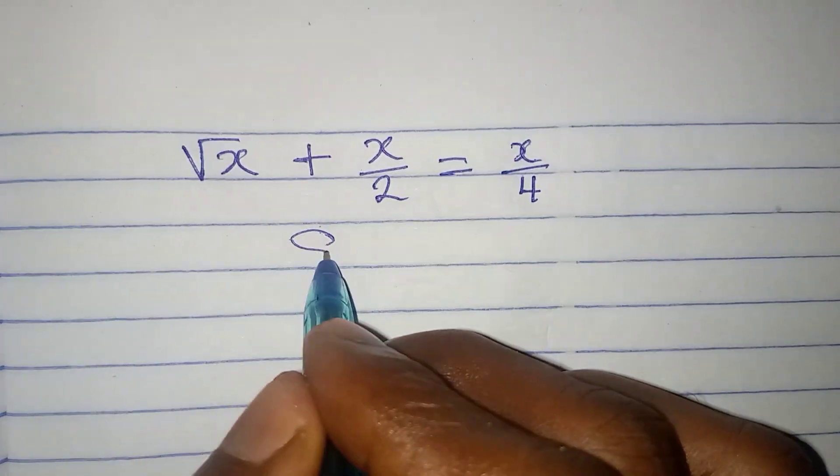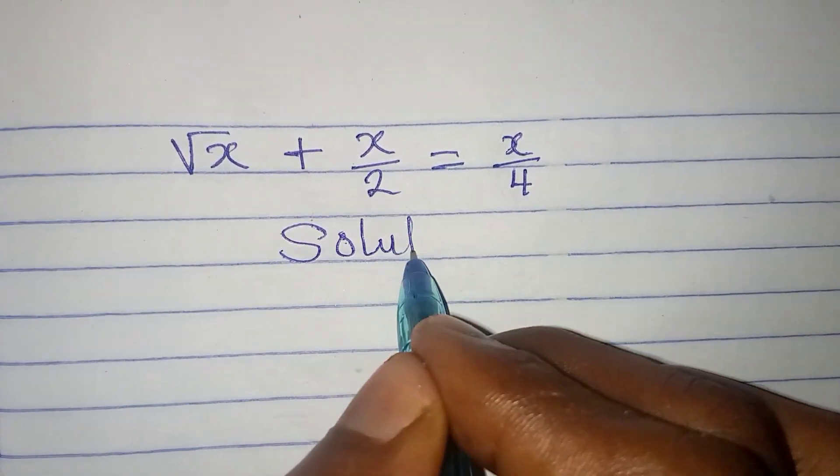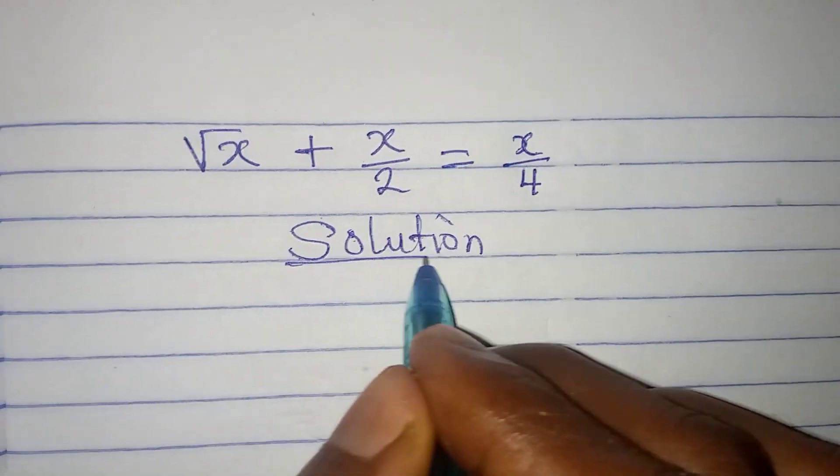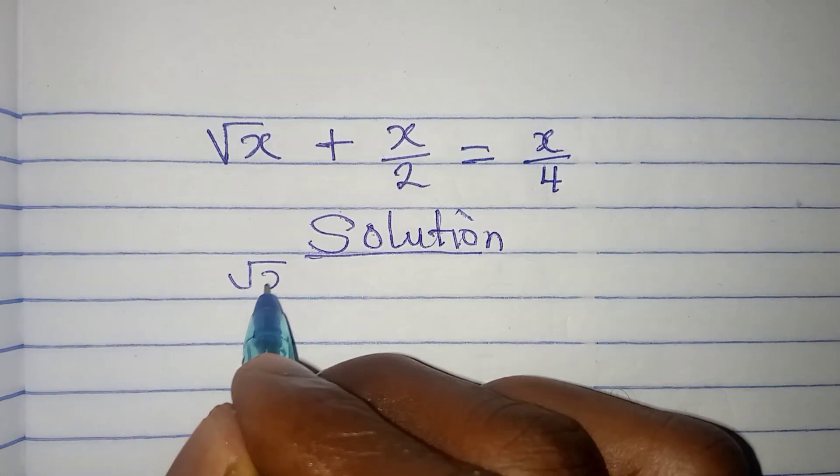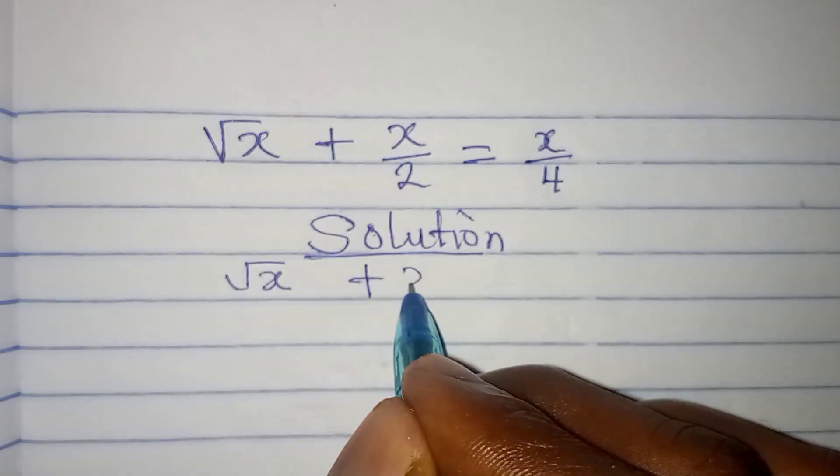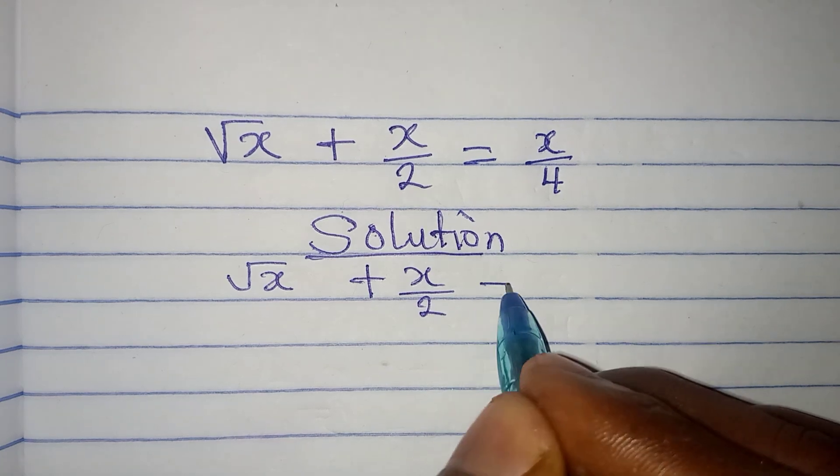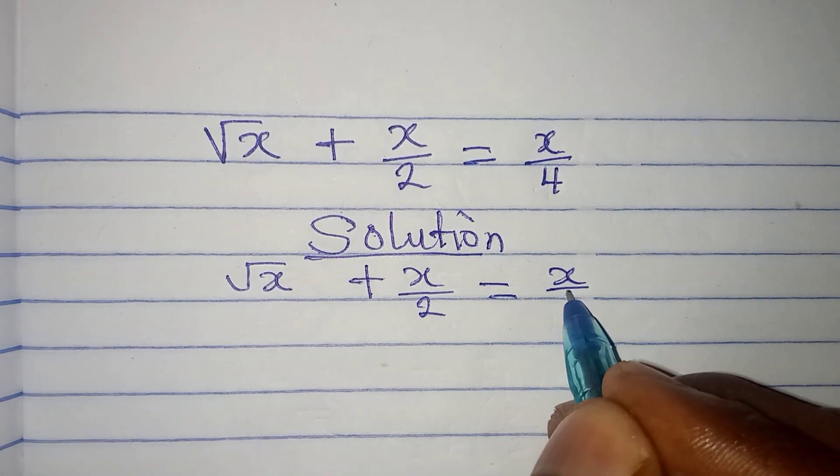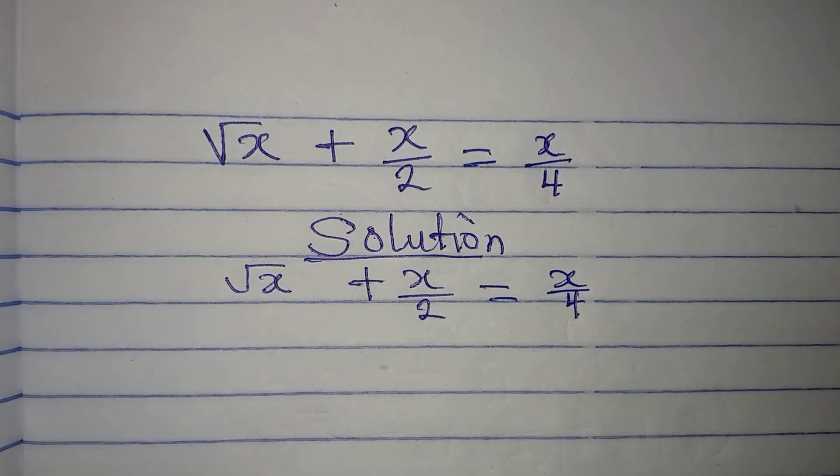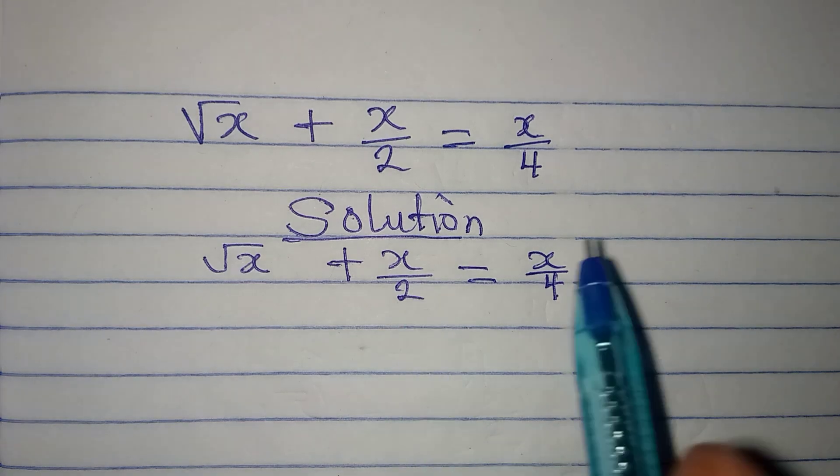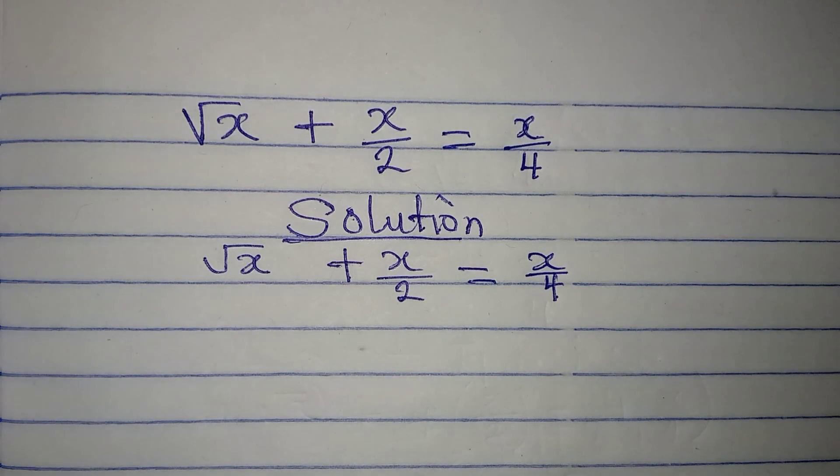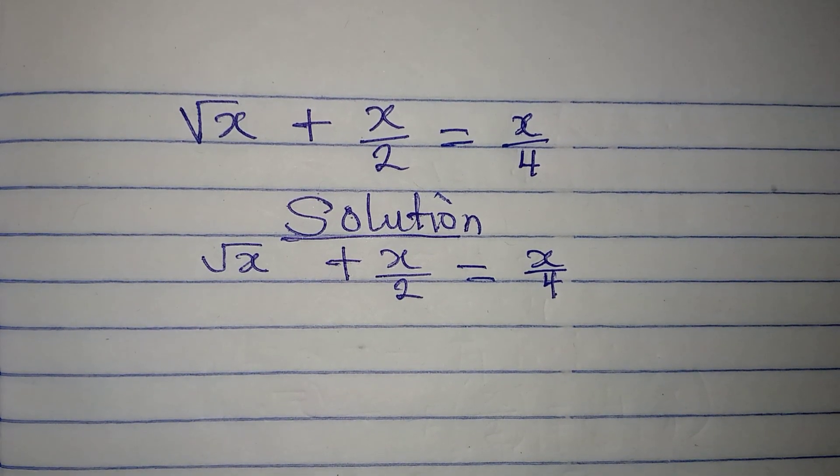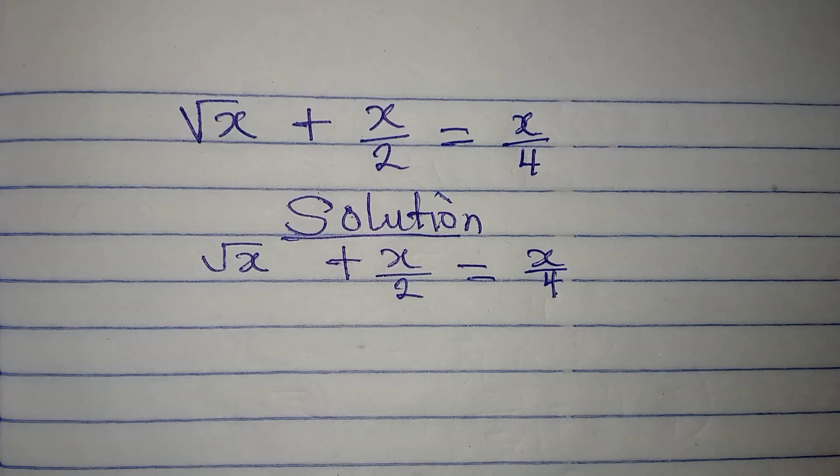Hello everyone, let's solve this problem. We have square root of x plus x over 2 equal to x over 4. Now this problem is going to lead to a quadratic equation and we shall have two solutions, but the second solution will not satisfy the equation.